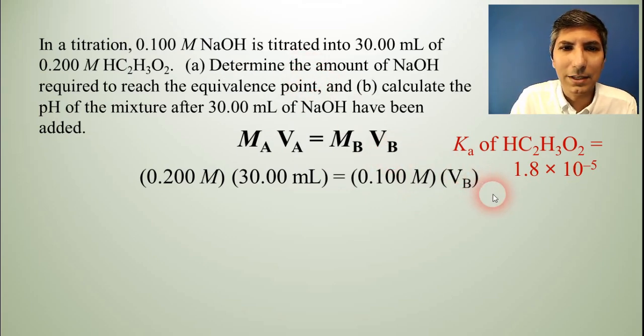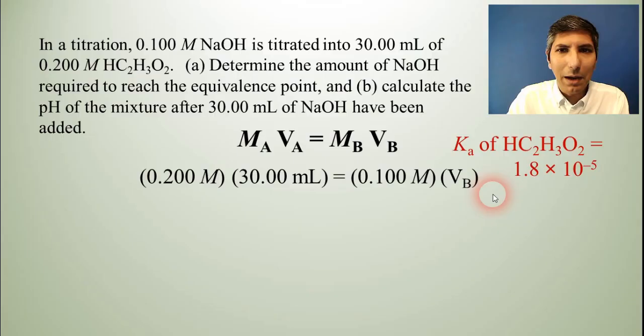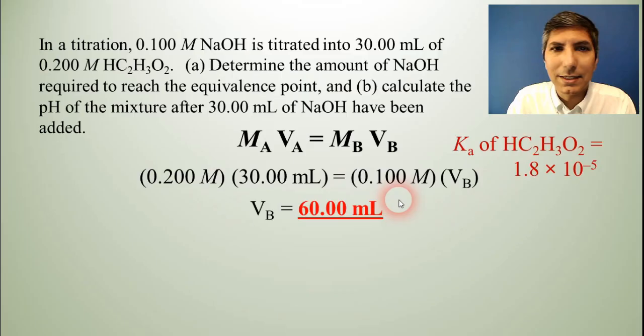So now we just calculate this, 0.2 times 30 divided by 0.1, that gets us 60 milliliters. So that's the answer. It's going to take 60 milliliters of sodium hydroxide to get to the equivalence point.